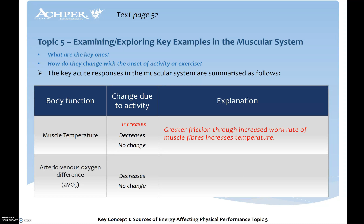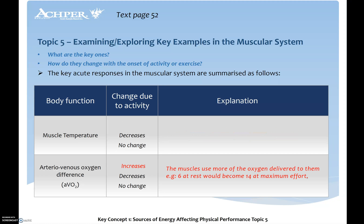Muscle fuel stores decrease — PC, glycogen, and fatty acids are depleted as we work within those energy systems. We'll see an increase in muscle temperature due to greater friction from the increased work rate. And we'll definitely see a greater AVO2 difference, meaning more oxygen is actually being delivered to the muscles, which is a result of a number of different chronic adaptations.